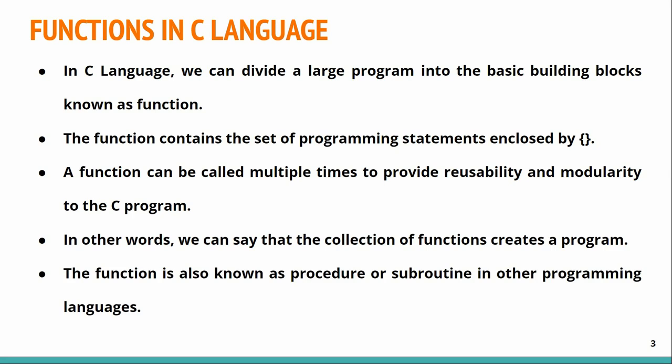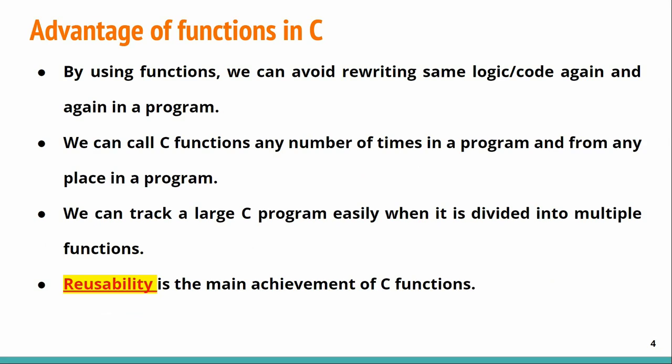A function is also known as a procedure or subroutine in other programming languages. The advantages of functions include: we can avoid rewriting the same logic again and again, we can call any C function multiple times from any place in the program, and we can track a large C program easily when it is divided into multiple functions. The main advantage is reusability — I will write code to show how you can declare a function once and call it again and again.